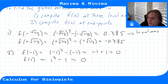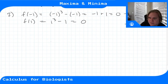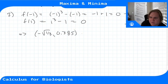Comparing the local max value (≈ 0.385) to the endpoint values (0): the local max is bigger, so the global maximum is at x = -√(1/3) with value approximately 0.385.